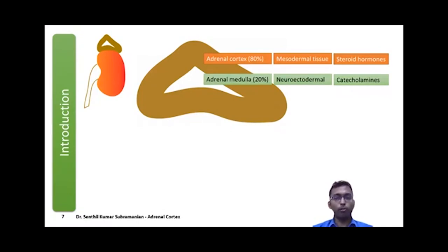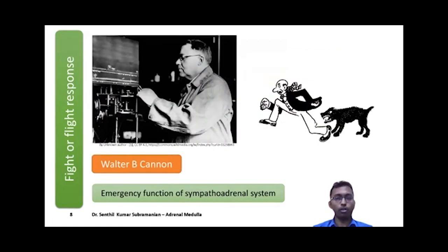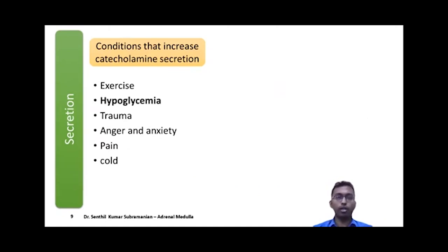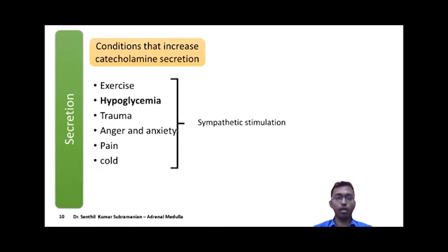Unlike adrenal cortical hormones, adrenal medullary hormones are not considered essential for life. However, they support the system and prepare the body for a fight-or-flight response, as explained by Walter B. Cannon. They form part of the sympatho-adrenal system in responding to emergency situations. Conditions that can increase catecholamine secretion include exercise, hypoglycemia, trauma, anger, anxiety, pain, and cold — of which hypoglycemia is a very potent stimulus.